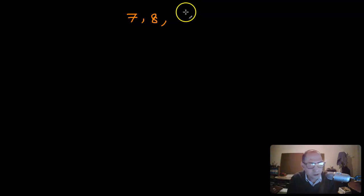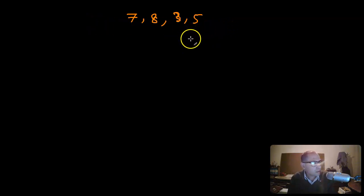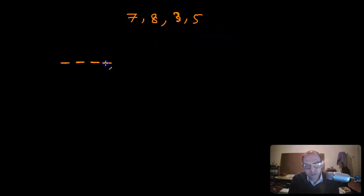In the previous video we talked about given a certain number of digits, how many numbers you can make with them, given specific conditions. Now what we want to do is the same idea - you have four digits given to you, for example seven, eight, three, and five, and you want to make a bunch of four-digit numbers using these four digits.